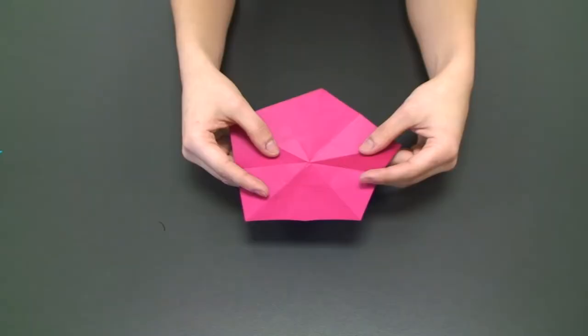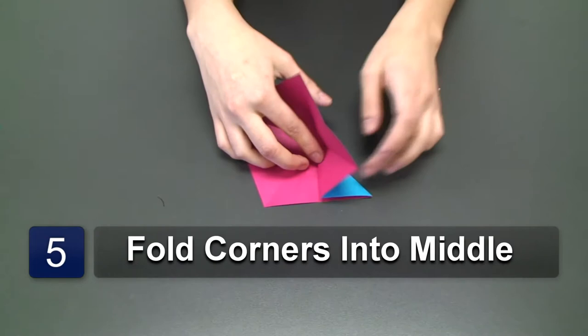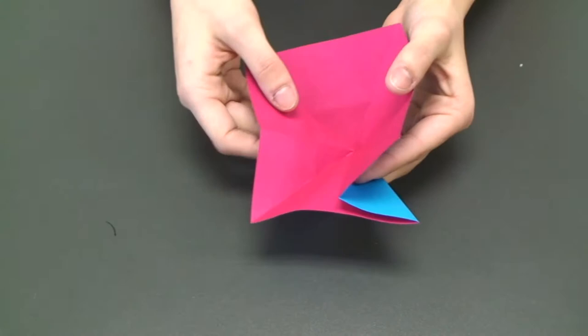So now that we have this, we're going to bring this right here to the middle. We're going to start creating the petals. So we do it like this. Same thing with this edge. We're going to bring it here.